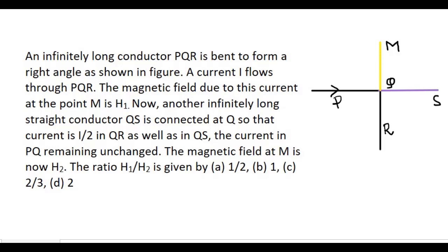Now another infinitely long straight conductor QS is connected at Q so that current is I by 2 in QR as well as in QS. The current in PQ remaining unchanged. The magnetic field at M is now H2. The ratio H1 divided by H2 is given by: